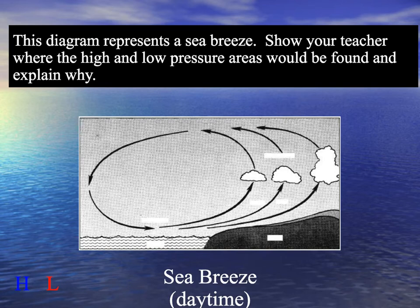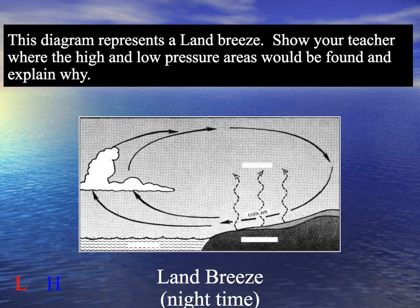This is a diagram of a sea breeze. Show your teacher where the high and low pressure areas would be found and explain why this is a sea breeze. Pause the movie while you do this. Now this time with a land breeze — call your teacher over, pause the movie, and explain where the high and low pressure areas would be and what causes this to be a land breeze.